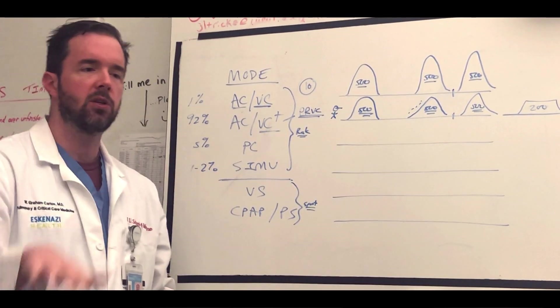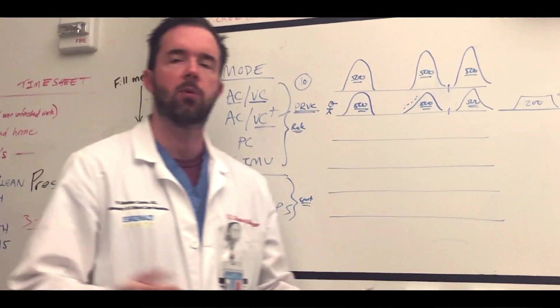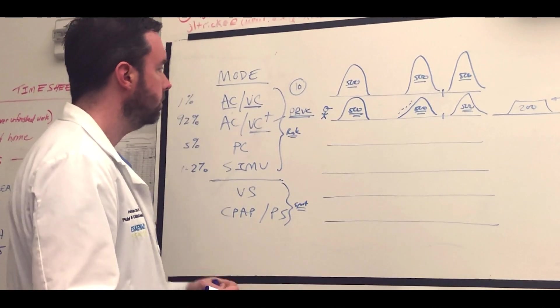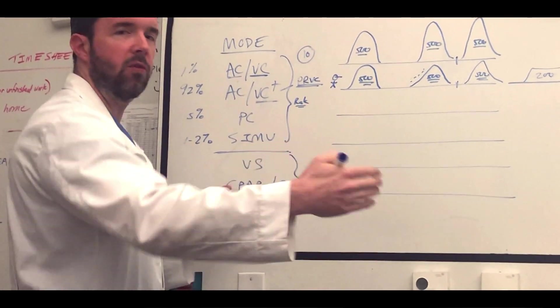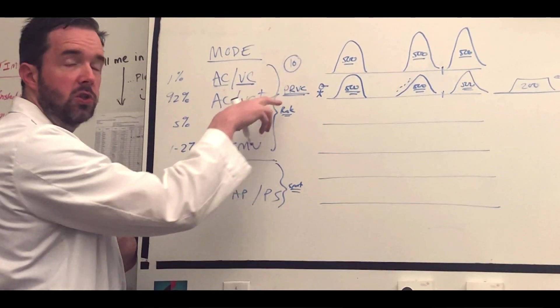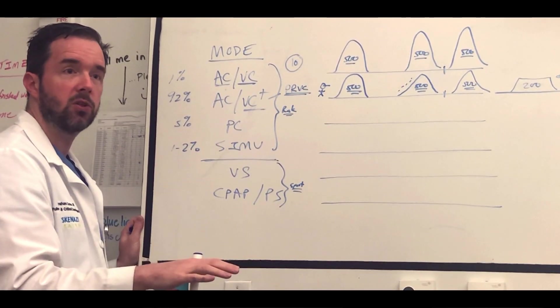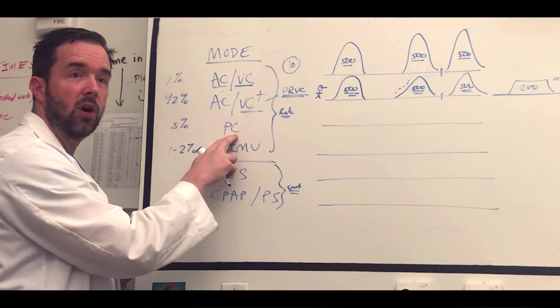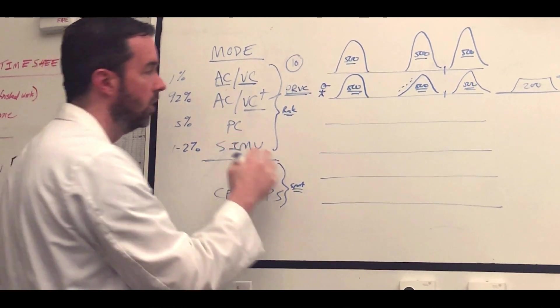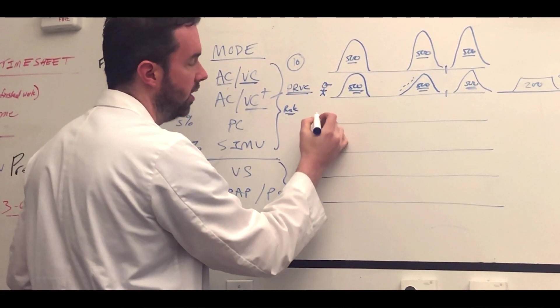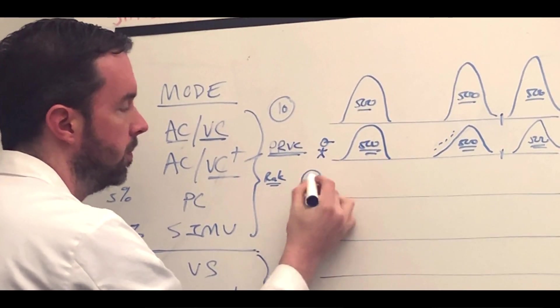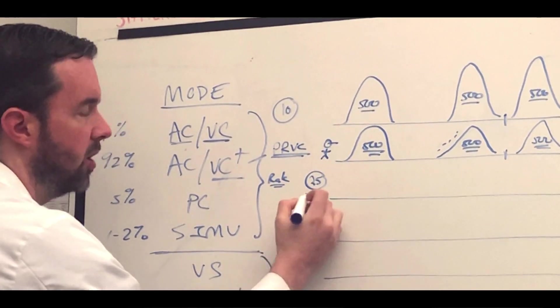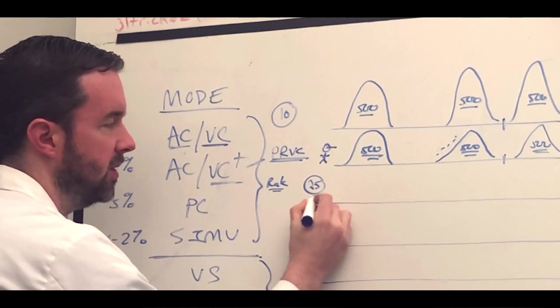The next mode is pressure control. In pressure control, we flip the script. So in the first two we were targeting volumes and watching pressure, now we're going to target pressures and watch volumes. In pressure control, you set a pressure, let's say it's 25 of inspiratory pressure. That 25 is going to be added on top of the PEEP that's been set, and let's say a typical PEEP is 5.